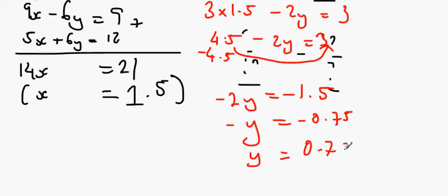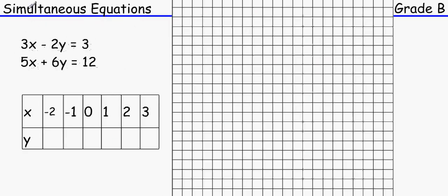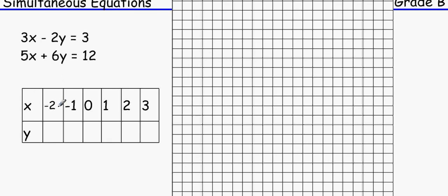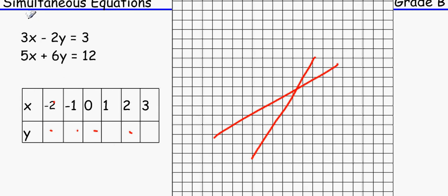If we did this graphically, we'd replace x with values like minus 2, minus 1, 0 to build a table, plot both lines, and look at the intersection coordinates to find the answer. That's just a brief overview of simultaneous equations.